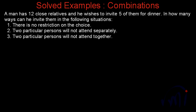Here we are with solved examples based on combinations. The problem statement says a man has 12 close relatives and he wishes to invite 5 of them for dinner. In how many ways can he invite them in the following situations? He has 12 relatives and can choose any 5, and the order in which he is choosing does not matter, so we are going to solve these problems using combinations.